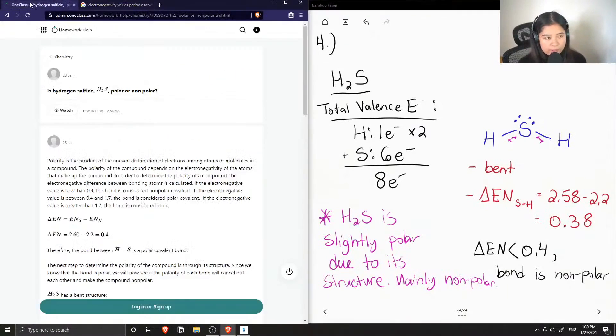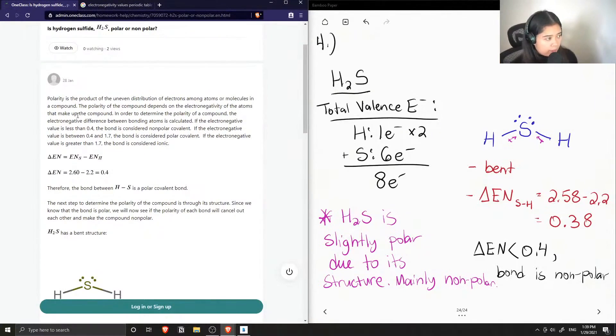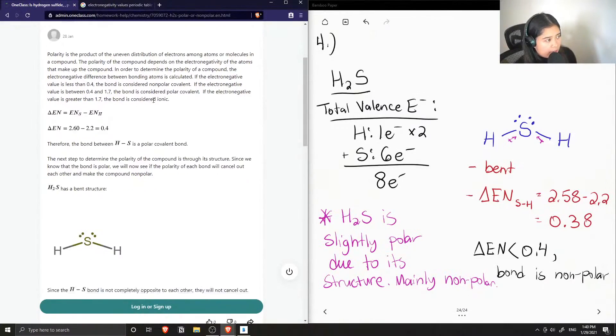So again it's a bit up for debate. Let's see what the tutor said. Polarity is the product of the uneven distribution of electrons among atoms or molecules in a compound. The polarity of the compound depends on the electronegativity of the atoms that make up the compound. In order to determine the polarity of a compound, the electronegativity difference between bonding atoms is calculated.